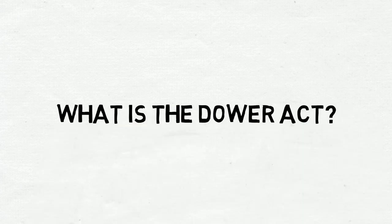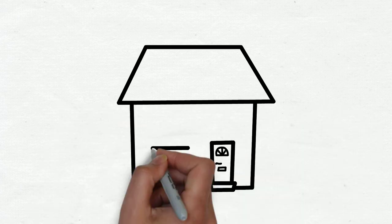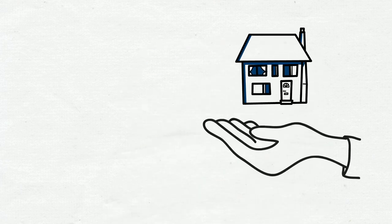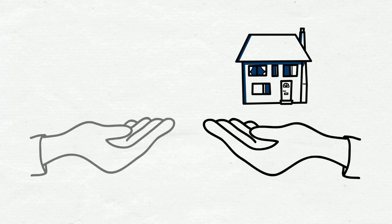So what is the Dower Act? The Dower Act is a law that is meant to protect a married person's right to live in their home if the house and land are solely owned in the name of their spouse.